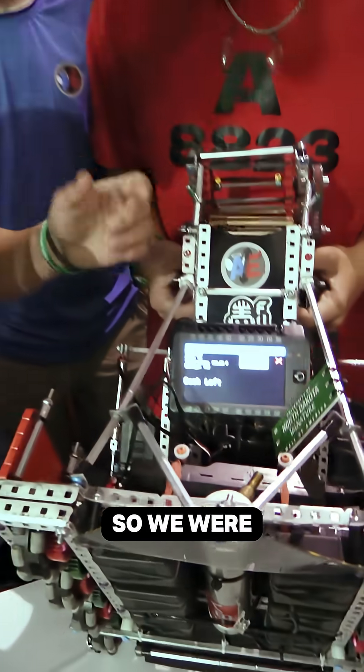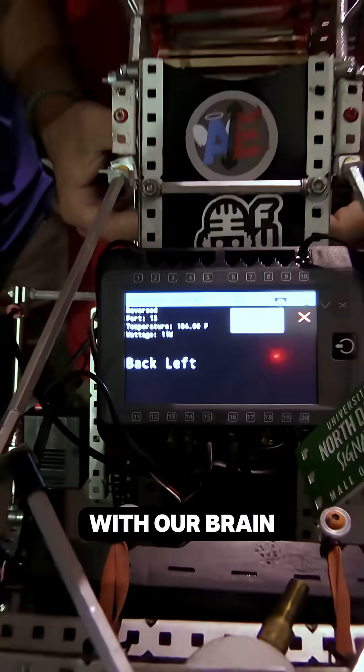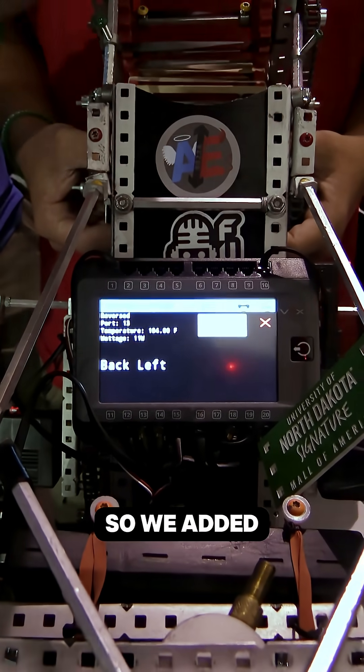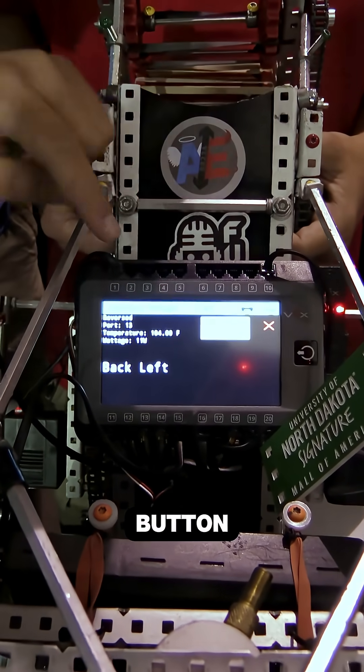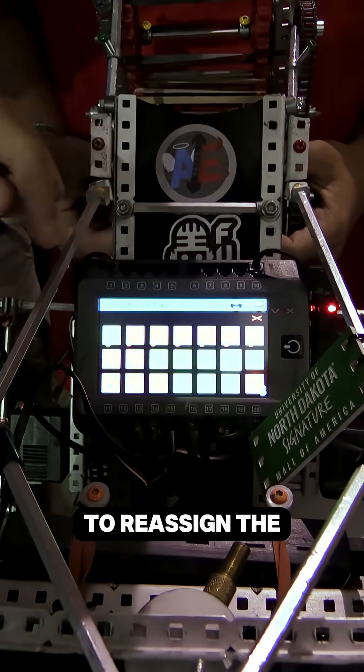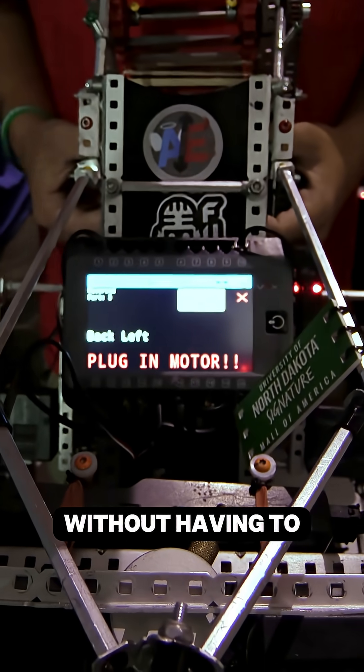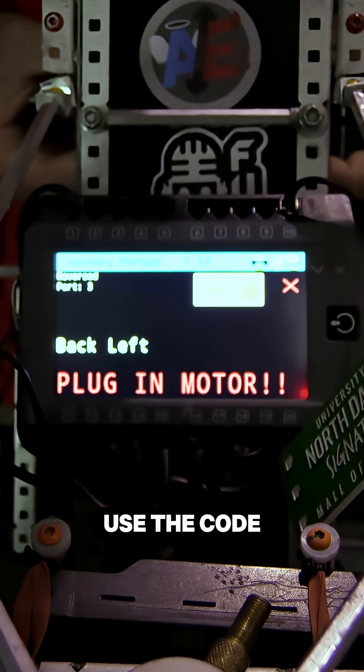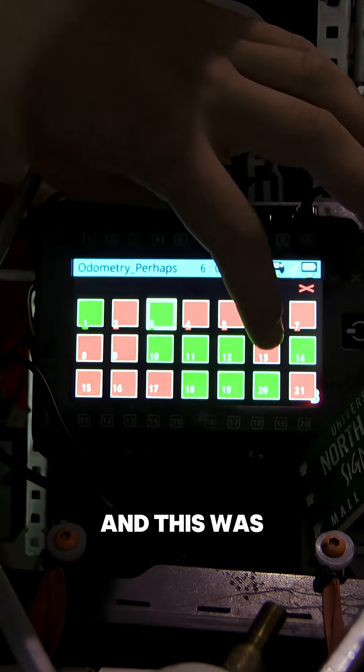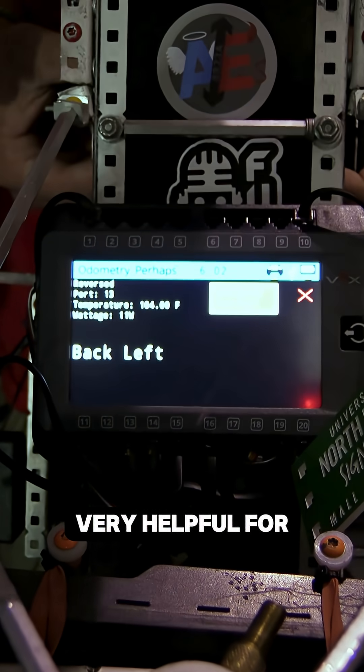And there's this. So we were having a problem with our brain where the ports would go out. So we added this emergency reassign button. This allows you to reassign the port of any motor in the brain without having to use the code. And this was very helpful for our matches.